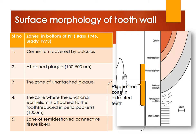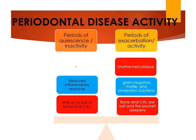The surface morphology of the tooth wall shows different zones: a zone of cementum covered by calculus, a zone of attached plaque covering the calculus (approximately 100–500 µm in diameter), a zone of unattached plaque, a zone where the junctional epithelium is attached to the tooth — which is reduced to approximately 100 µm in periodontal pockets — and a zone of semi-destroyed connective tissue fibers. The last three zones together constitute the plaque-free zone observed in extracted teeth.